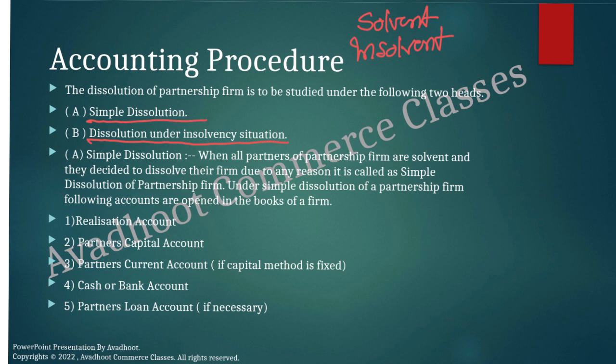Solvent means a person whose assets are in a position to make the payment of liabilities — assets over liabilities makes a solvent person. Insolvent means whose liabilities are greater than assets — after realizing assets, they are not in a position to pay liabilities. Dissolution under insolvency means when one partner becomes insolvent.